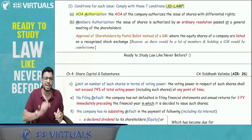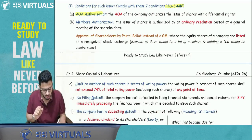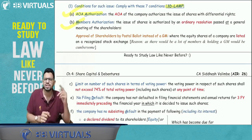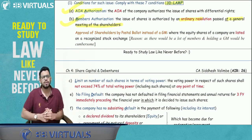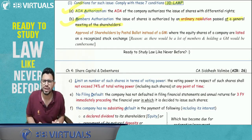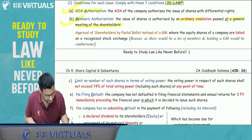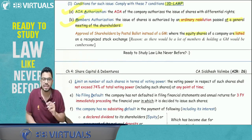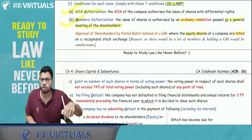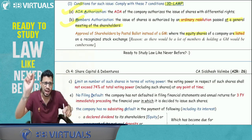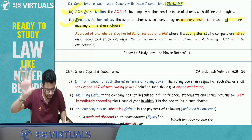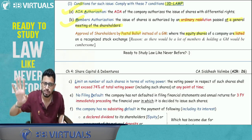Condition 1 — AOA authorization: To issue equity shares with differential rights, you need AOA authorization. Condition 2 — Members' authorization: You need an Ordinary Resolution passed at a general meeting of shareholders. But if the securities are listed, since there will be many shareholders, a general meeting becomes impractical — so in the case of listed securities, you can conduct a postal ballot and pass an ordinary resolution through that. The reason is that in listed companies, a lot of public is involved.